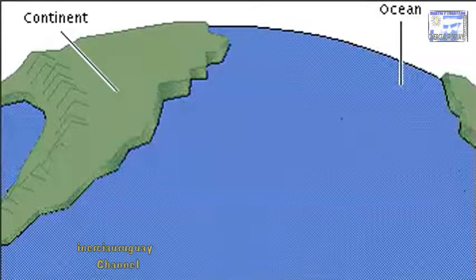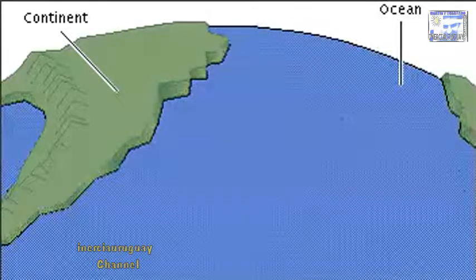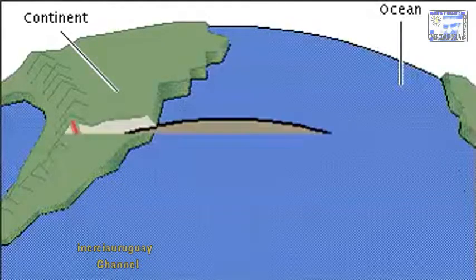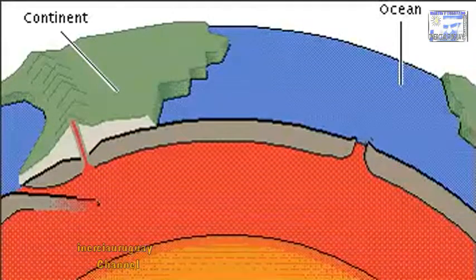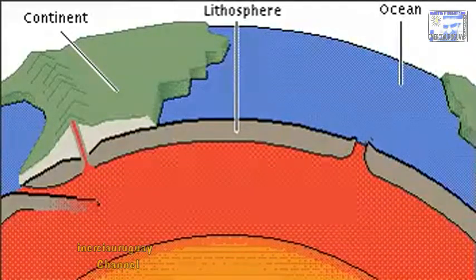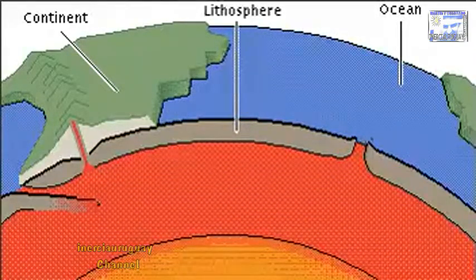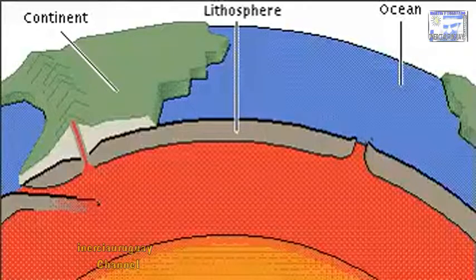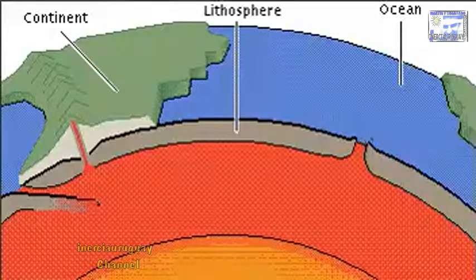The Earth's continents and oceans rest upon a layer of rock called the lithosphere. The lithosphere consists of roughly a dozen separate rock masses, or plates. Plate tectonics is the theory that describes the motion of these plates.